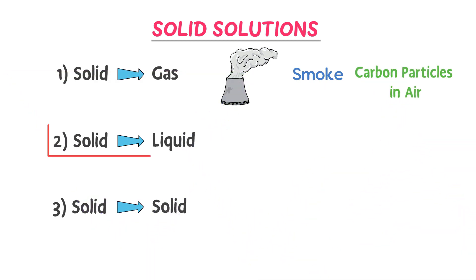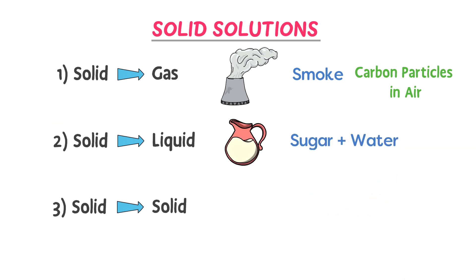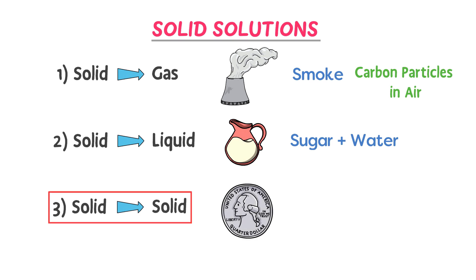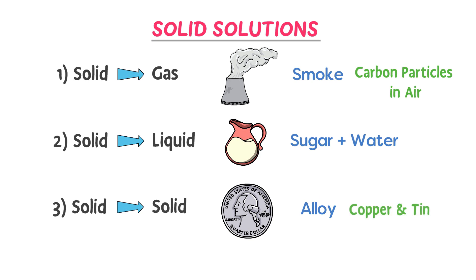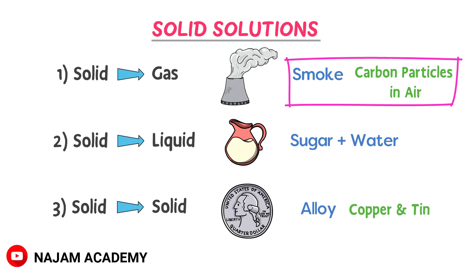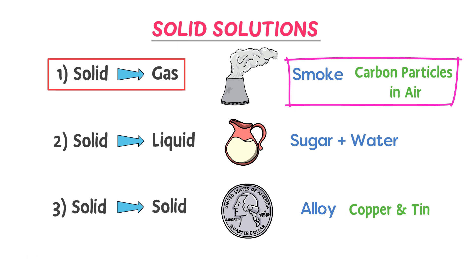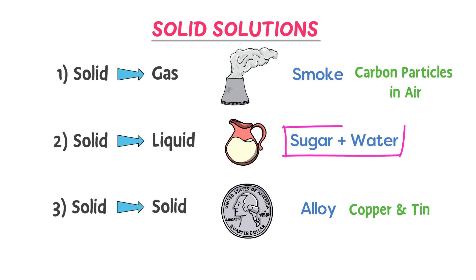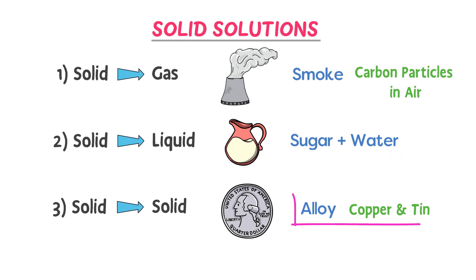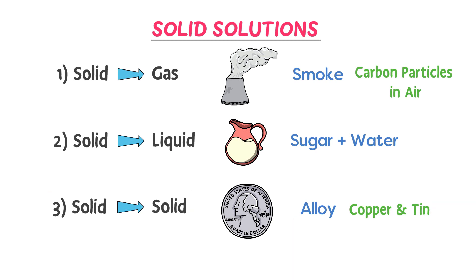The example of a solid in liquid solution is sugar and water. The example of a solid in solid solution is an alloy — alloys are made up of two or more metals, like an alloy of copper and tin. So, smoke has solid dissolved in gas, sugar and water has solid dissolved in liquid, while an alloy has solid dissolved in solid.